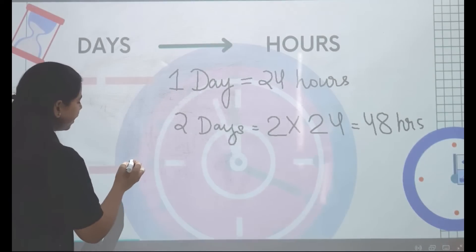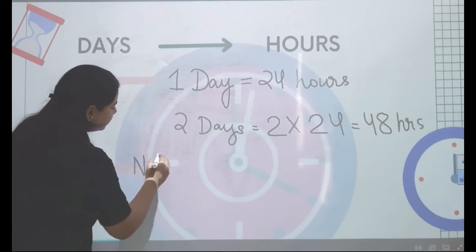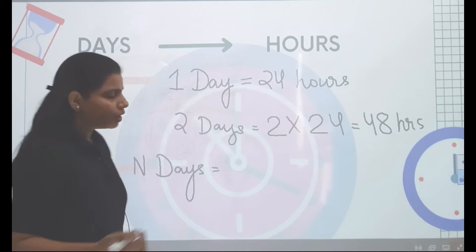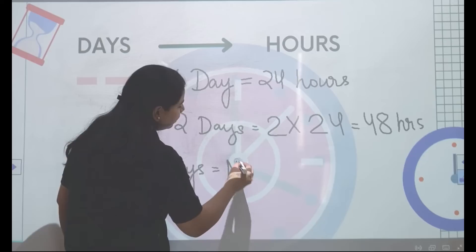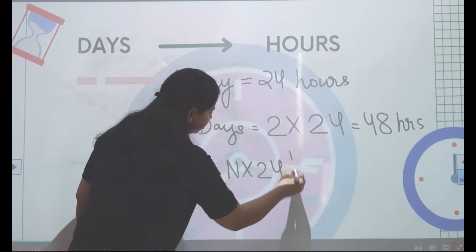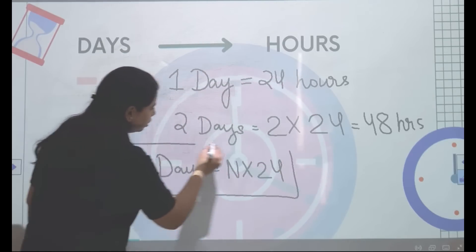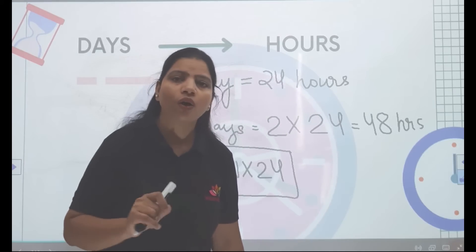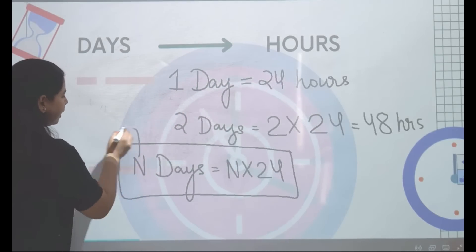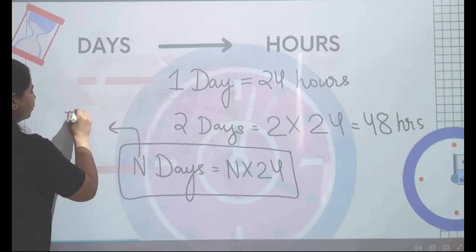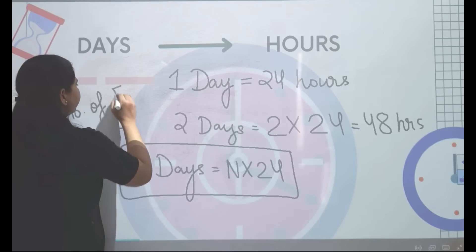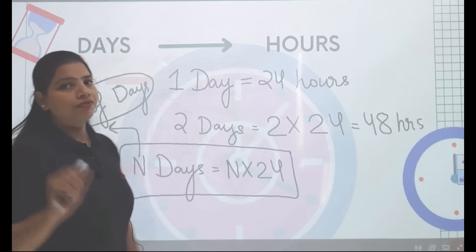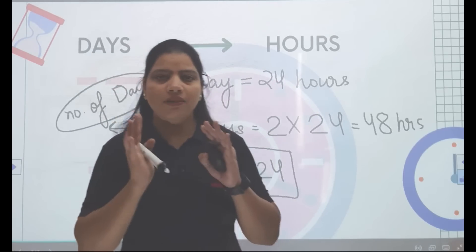That means if you have n number of days, then hours will be n times 24. You always need to multiply 24 with the number of days given to you. Here, n is the number of days.